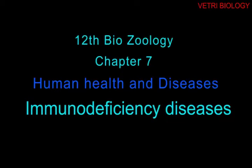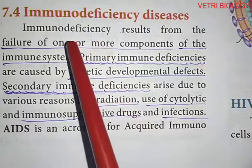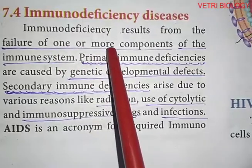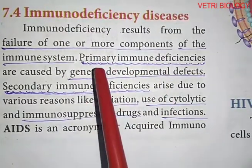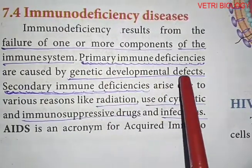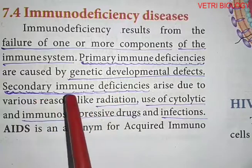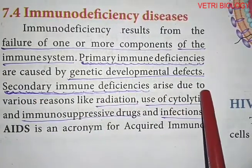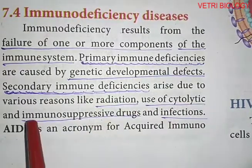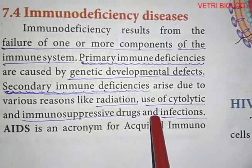Dear children, in previous class we have learnt about vaccines, vaccination and hypersensitivity. In today's class we are going to learn about immunodeficiency diseases. Immunodeficiency results from the failure of one or more components of the immune system. Primary immune deficiencies are caused by genetic developmental defects. Secondary immune deficiencies arise due to various reasons like radiation, use of cytolytic and immunosuppressive drugs, and infections.